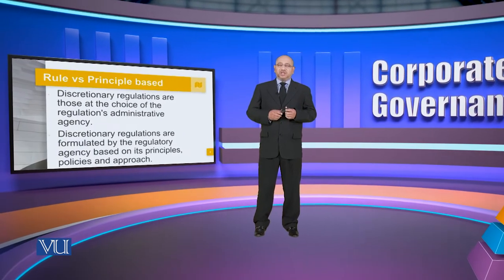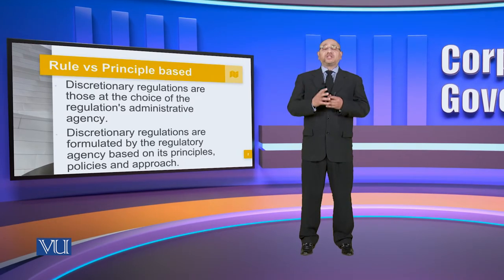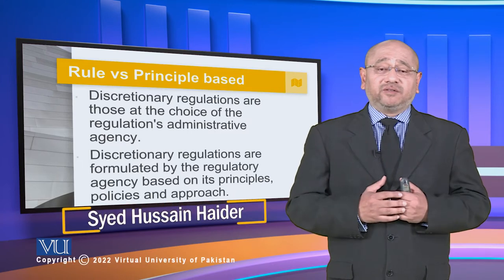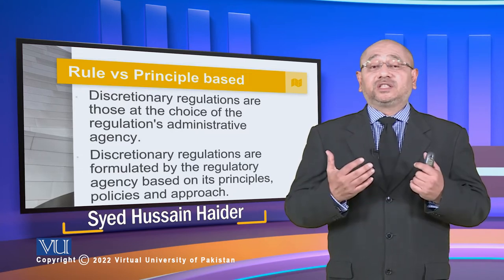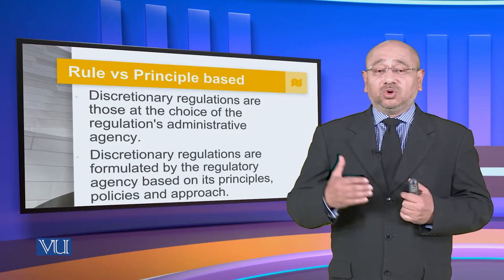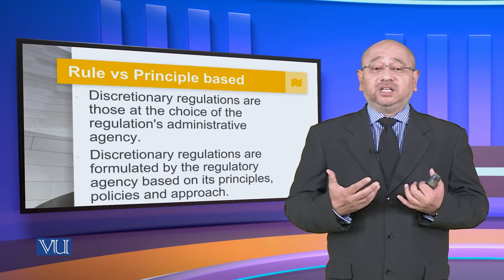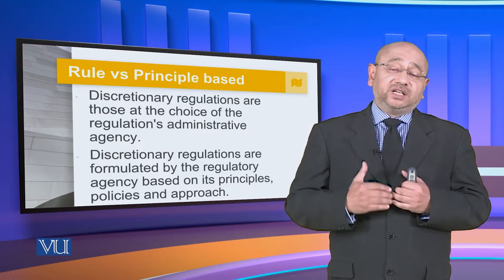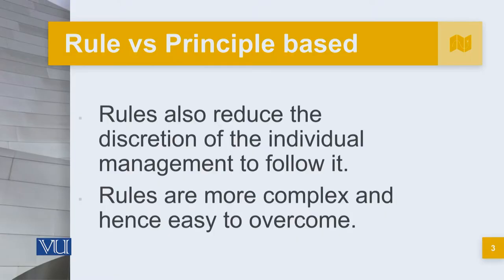When we are talking about rule versus principle-based regulations, discretionary regulations are those that are the choice of the administrative agency. Discretionary regulations are formulated by the regulatory agency based upon its principles, policies, and approach. A very good example is how district governments have their own price control committees and price control regulations. Based upon that, every district has its own pricing. If we start from Karachi and go up to Skardu, we see different prices for different commodities — these are discretionary and based upon certain principles, policies, and approach regarding how pricing is calculated. That is a very good example of what can be called principle-based regulations.